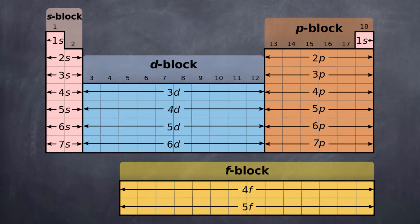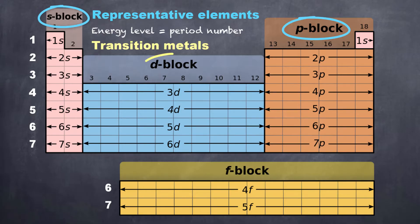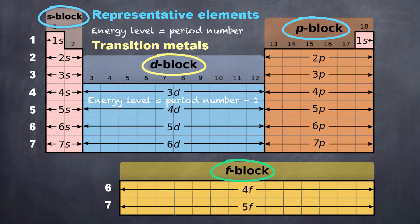We can see that the period that the elements are in — at least for the representative elements in the S block and P block — corresponds to the period number for that particular element. In the D block, the energy level we represent is actually one less than the period number. And in the F block, since it occupies the sixth and seventh periods, we're representing electrons in sublevels that are two below the actual period number.